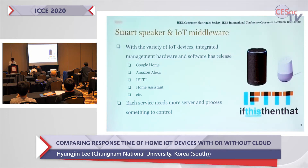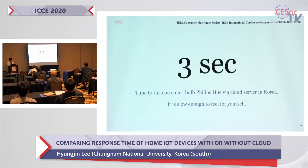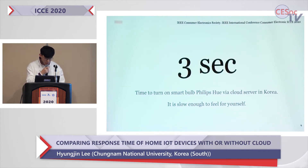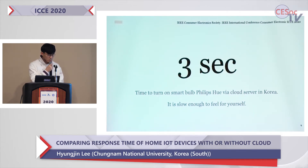It's very useful, but sometimes it's very slow — slow enough that you can feel it. About three seconds is the time to turn on or off a smart bulb like Philips Hue via cloud server in South Korea. It means if you want to control the Hue to do something, you need to wait. This is enough time to interrupt the action and press the button again.